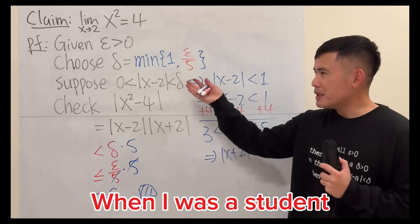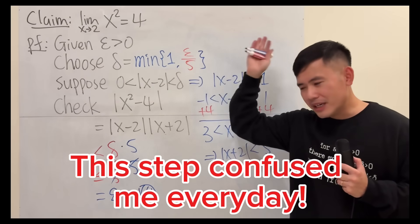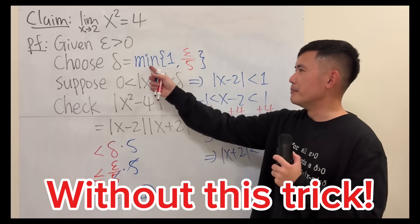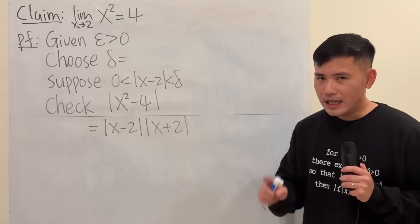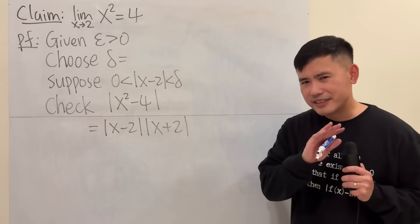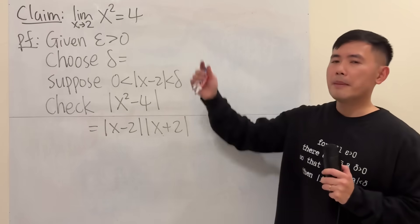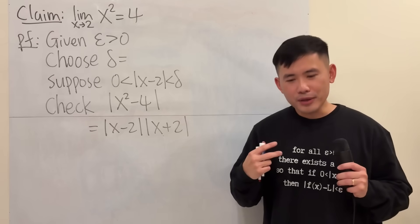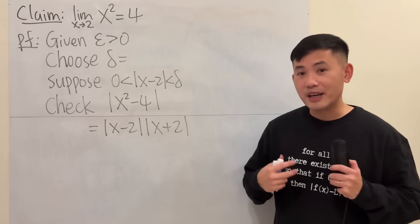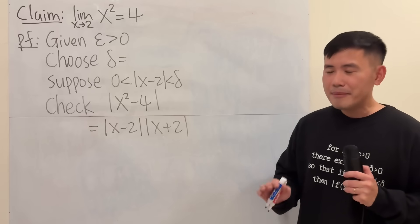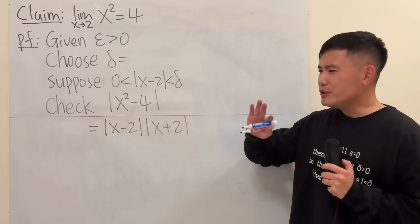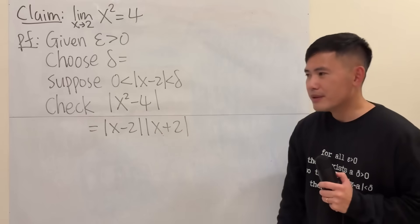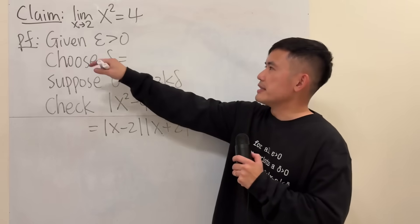This step is like out of nowhere. When I was a student, this step confused me a lot. Today I want to talk about one step that causes so much confusion when we are proving a limit using the epsilon-delta definition. I'm not talking about the definition itself — I'm talking about just that one step, which happens quite a lot especially when we are dealing with a non-linear function. So what is it? Let's take a look at this example.